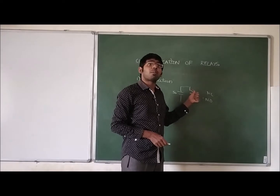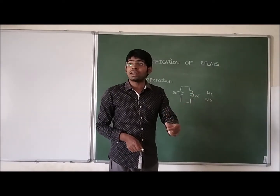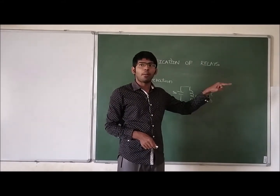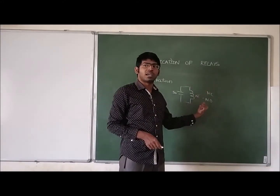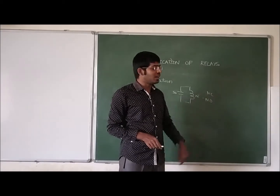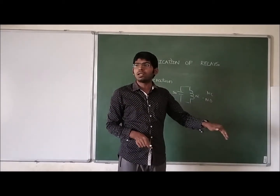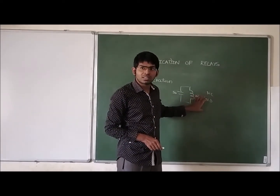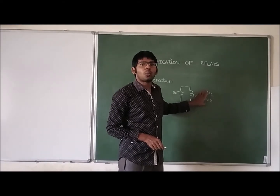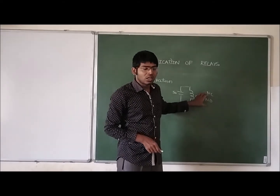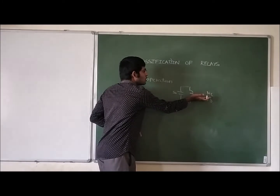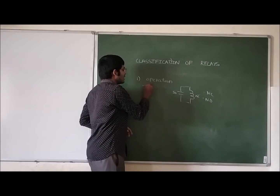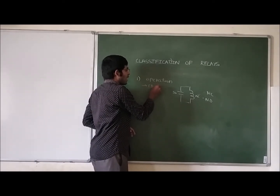This type of action is called electromagnetic action. We are giving electric supply, which creates a magnetic field, and this magnetic field moves the armature from normally closed to normally open. That is why this operation is called electromagnetic operation. If the relay armature or mechanical contact moves because of electromagnetic action, then that relay is called an electromagnetic relay.